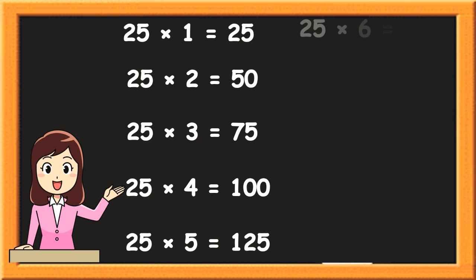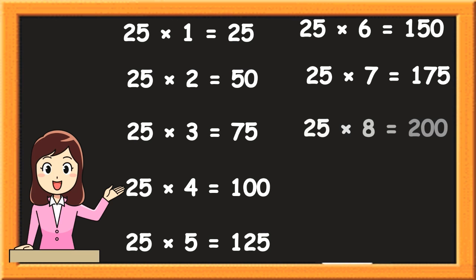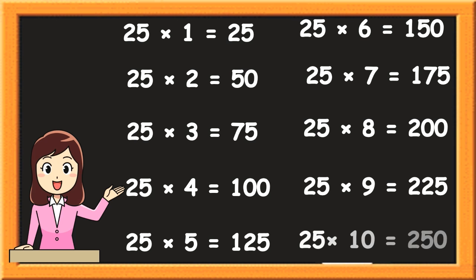25 6s are 150. 25 7s are 175. 25 8s are 200. 25 9s are 225. 25 10s are 250.